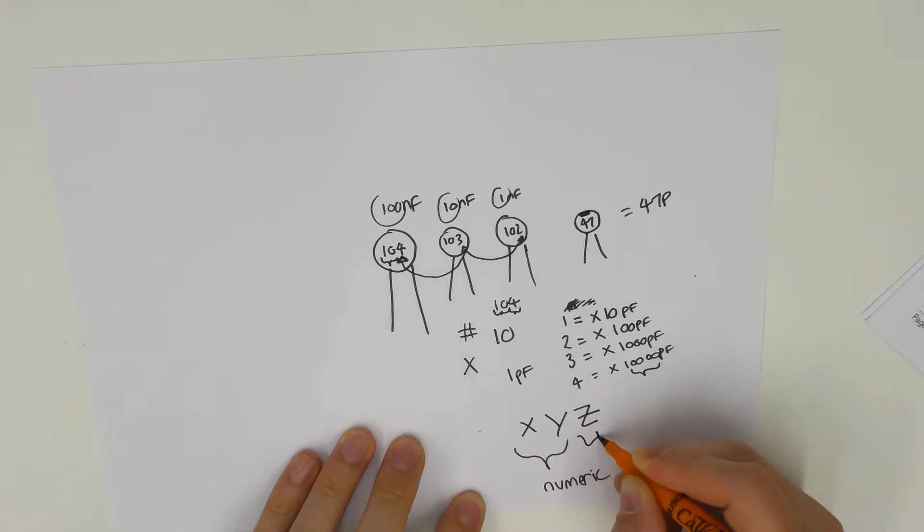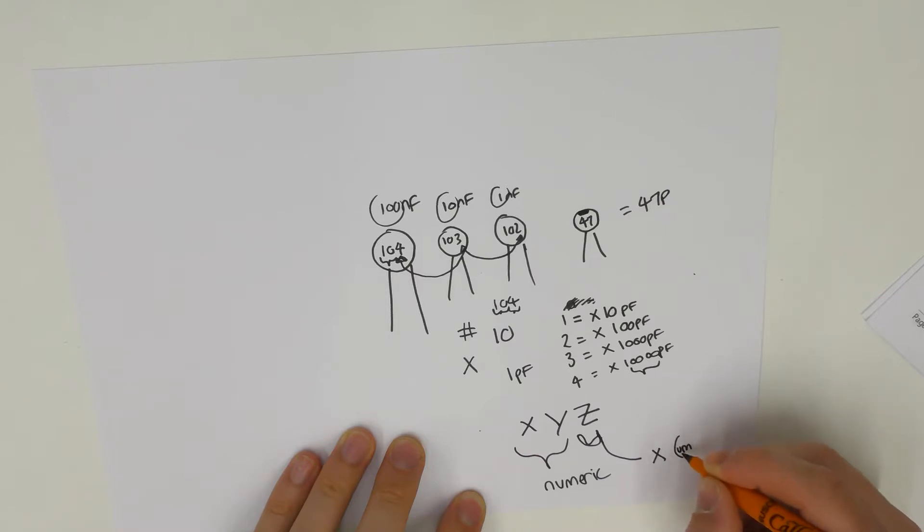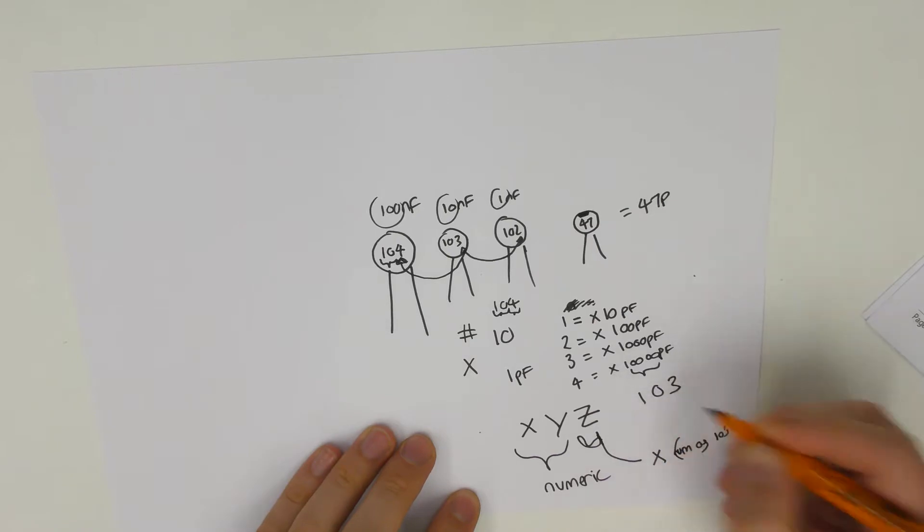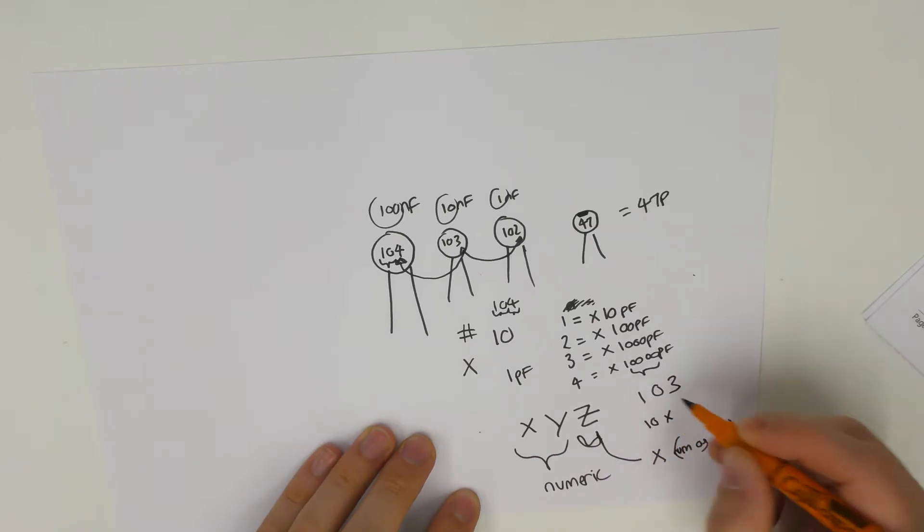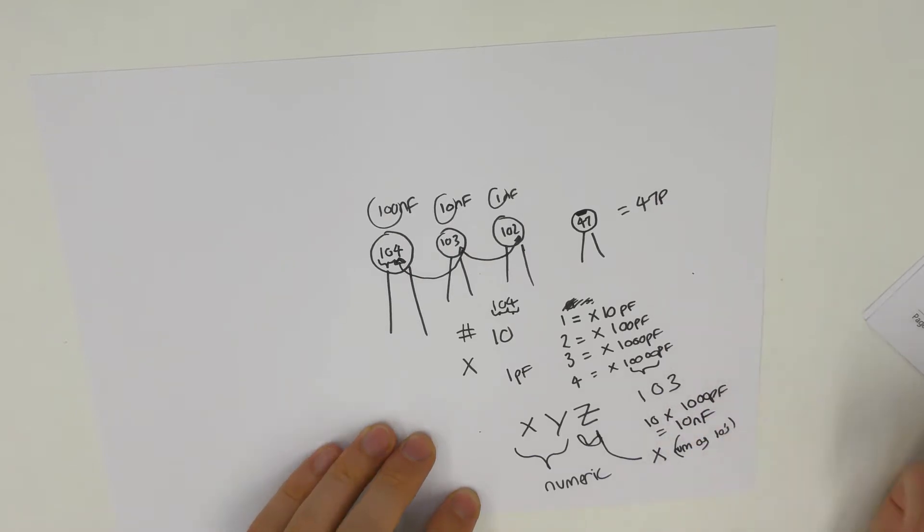And Z here, I can't even draw the little bracket, and Z is the multiplier or otherwise known as the number of tens, if that makes sense. So, for example, if you've got 1, 0, 3, then you're doing 10 multiplied by 3, so it's 1, 2, 3 picofarads. So what you get is 10 nanofarads.